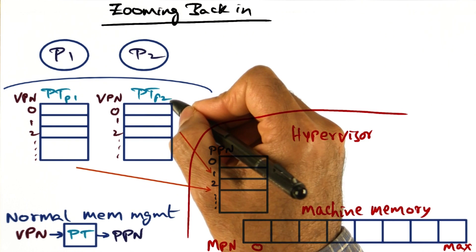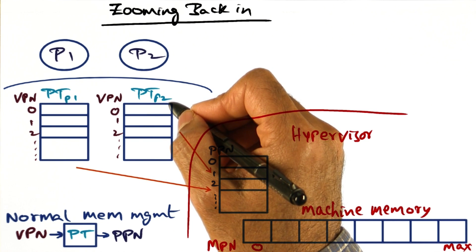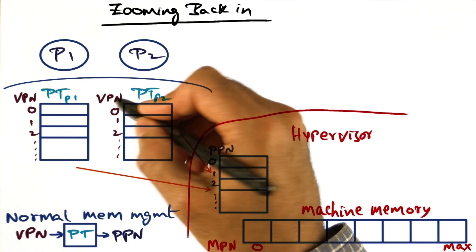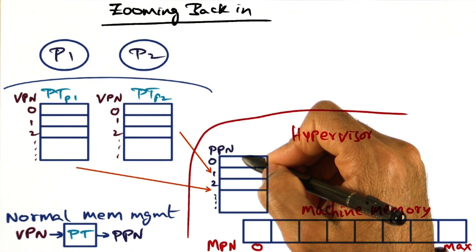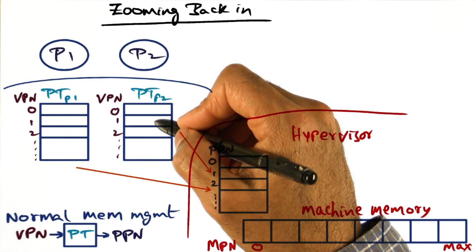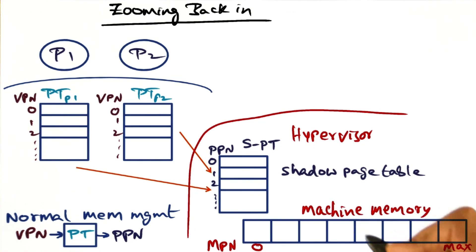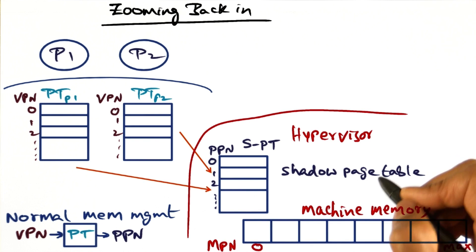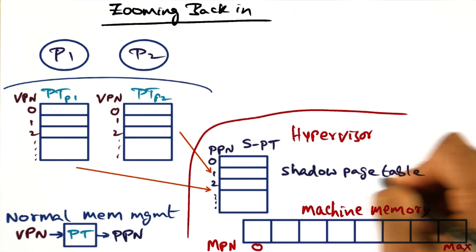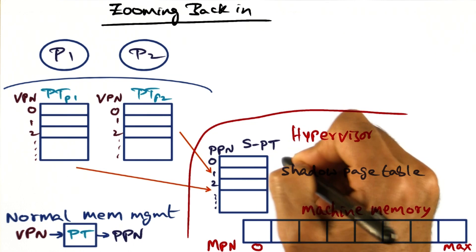This data structure, the page table, is the traditional page table that gives the mapping between virtual page number and the physical page number. The mapping between the physical page number and the machine page number, that is PPN to MPN mapping, is kept in another page table, which is called shadow page table, SPT.